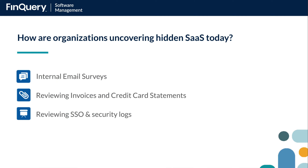When we think about how organizations are uncovering hidden SaaS or shadow IT today, most of these processes are manual and time intensive and do a very poor job of giving organizations the detail they need to actually address this problem. Organizations are relying on things like internal email surveys with business owners or reviewing invoices and finding different transactions within their credit card statements. Many times, people are not even uncovering SaaS applications until they're doing a full comprehensive yearly audit and finding that all of these access events exist across their business without them knowing.